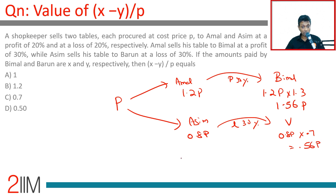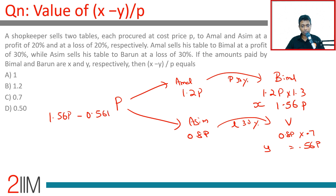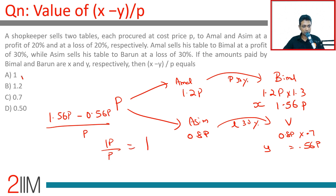If the amounts paid by Bimal and Barun are x and y respectively, then (x − y) / P = (1.56P − 0.56P) / P = 1P / P = 1. This is the answer.